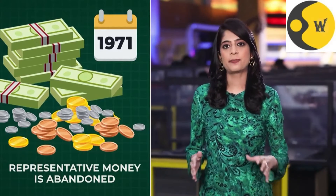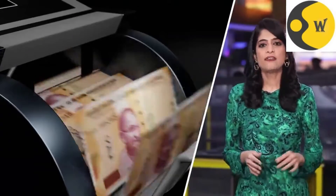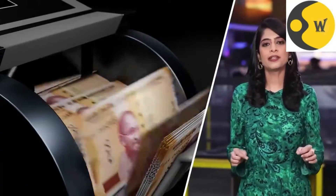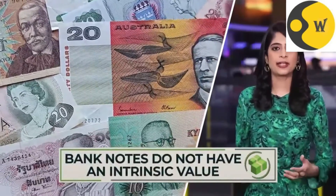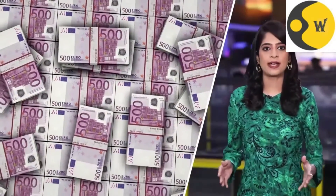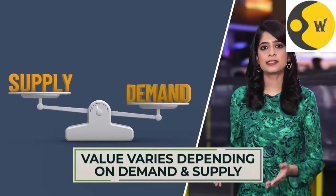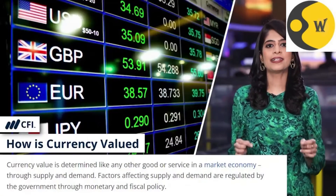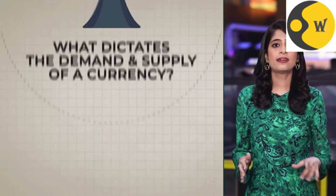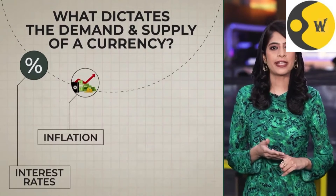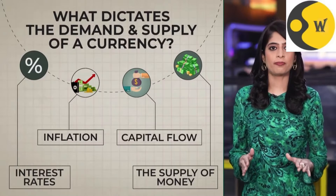So in 1971, the world abandoned representative money. Instead, fiat money was adopted. Fiat money is what we still use today. Our bank notes do not have an intrinsic value and are not backed by commodities either. Instead, the value varies depending on demand and supply. Demand and supply is influenced by a number of factors like interest rates, inflation, capital flow, and even the supply of money.